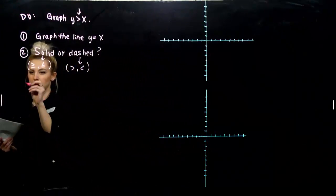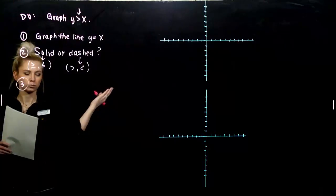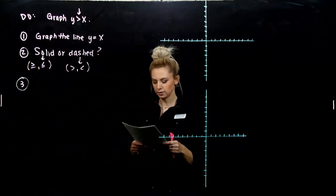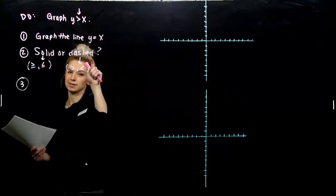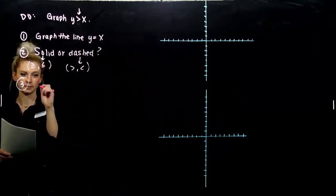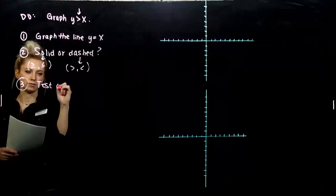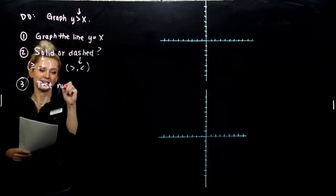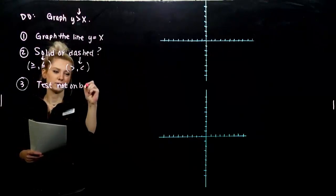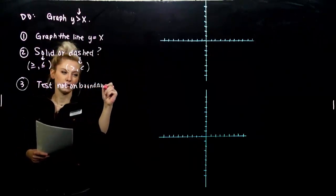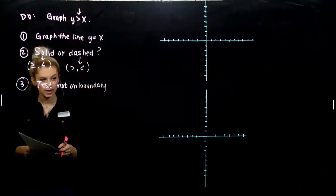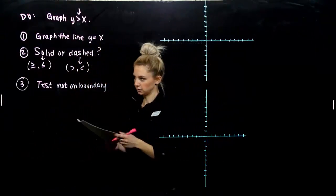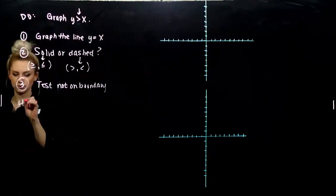Then after we have that boundary line, we have to determine what half of that plane is a part of the solution set. So we want to pick a test point that's not on the boundary line. Test point not on the boundary. And see if it makes our inequality true. If it does, you shade that side. If it doesn't, you shade the other. So after that, we just shade the solution set.